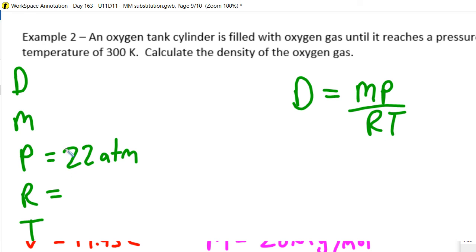An oxygen tank cylinder is filled with oxygen gas until it reaches a pressure of 22 ATMs. Because I'm using ATMs of pressure, I can use 0.0821 for my R-value gas law constant. Kelvin temperature is given to us, 300K. Remember,